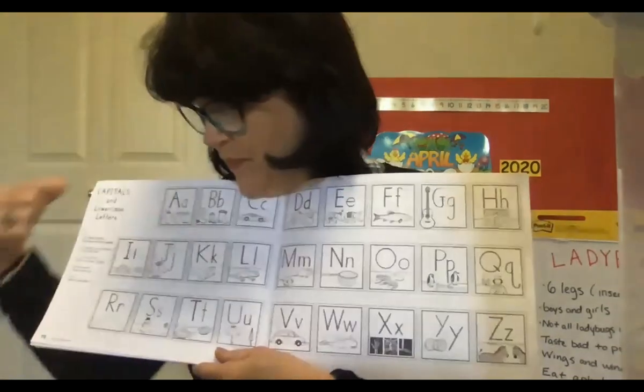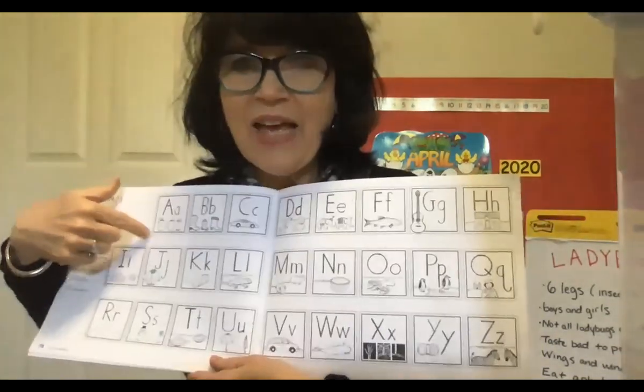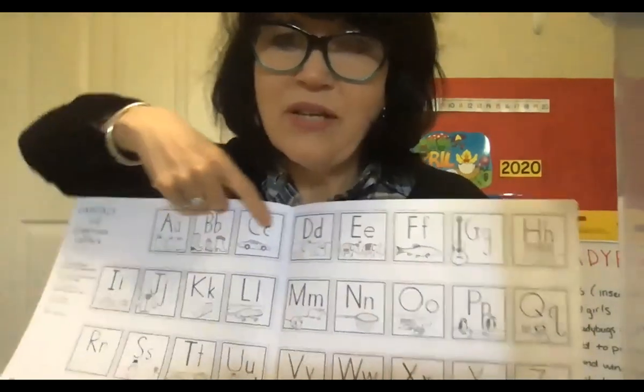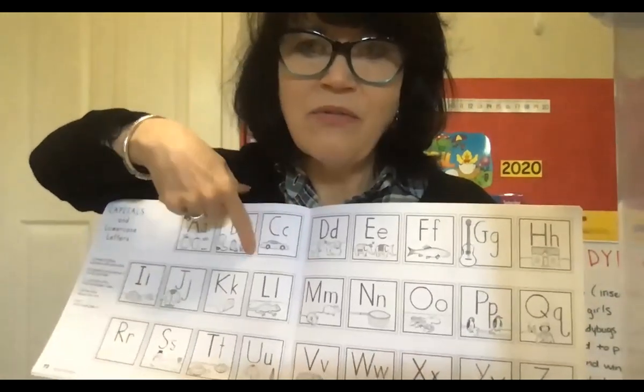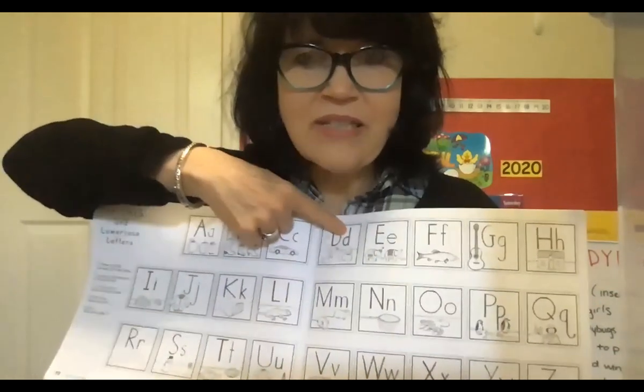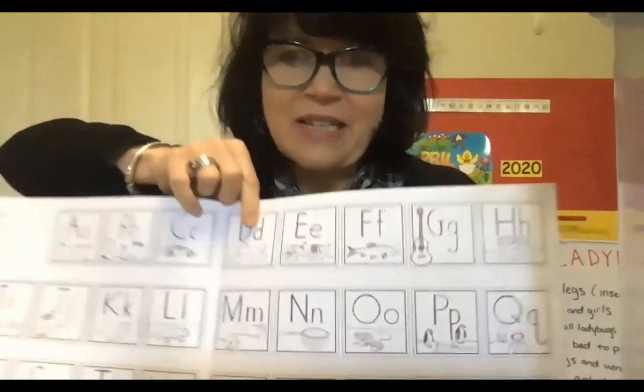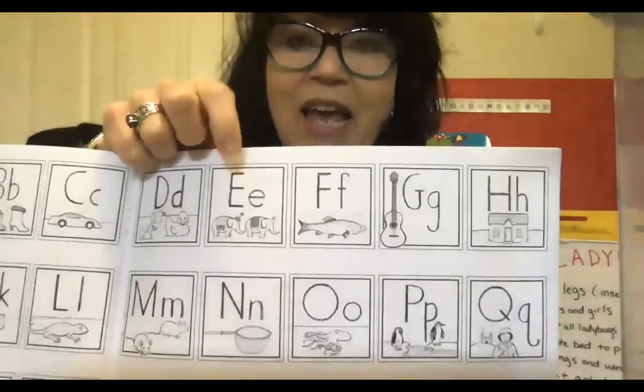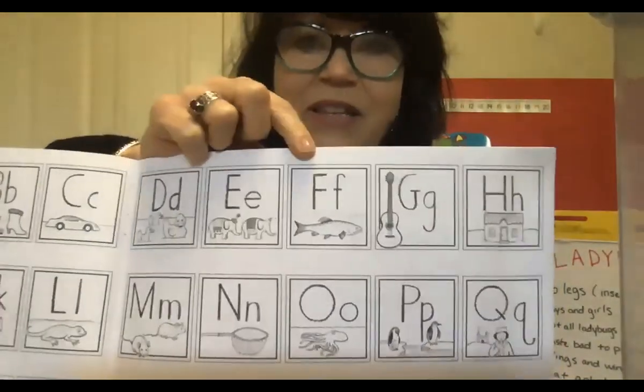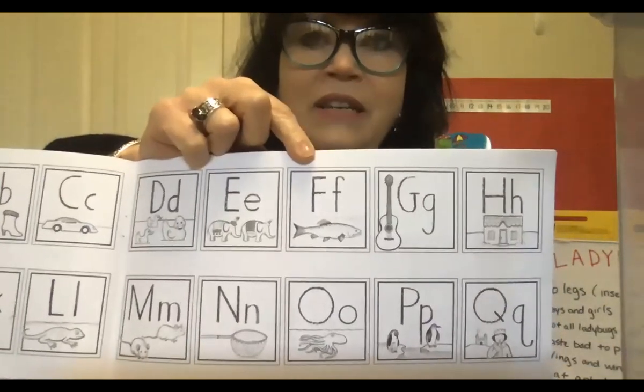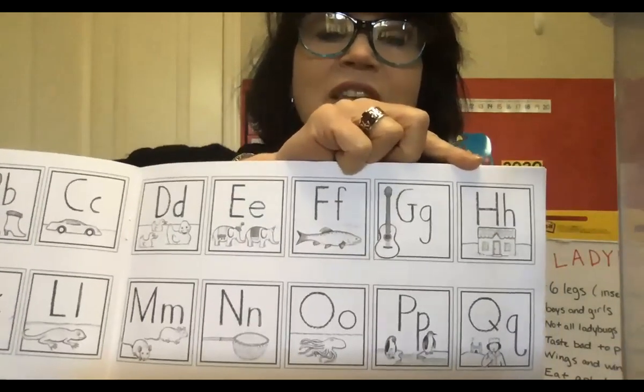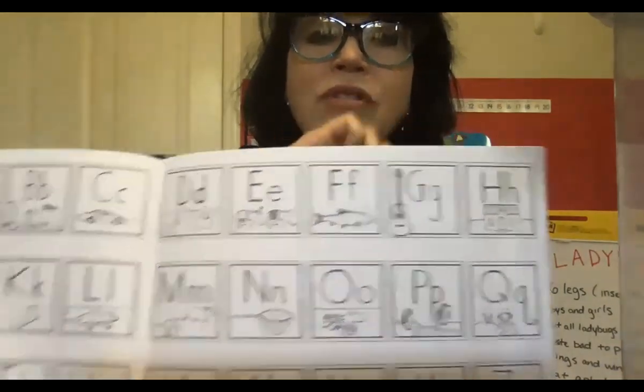So first, let's review. Remember, A says A as in apple. B says B as in boot. C says C as in what? Car, that's right. D says D as in duck, you're right. E says E as in egg, right. F says F as in fish. G says G as in guitar. H says H as in house.